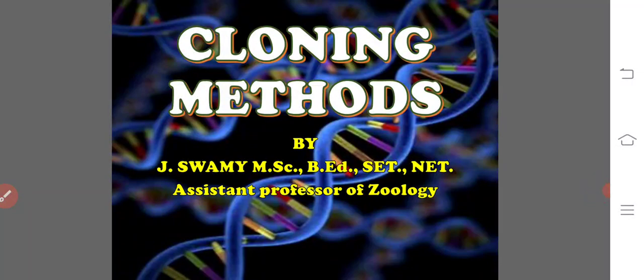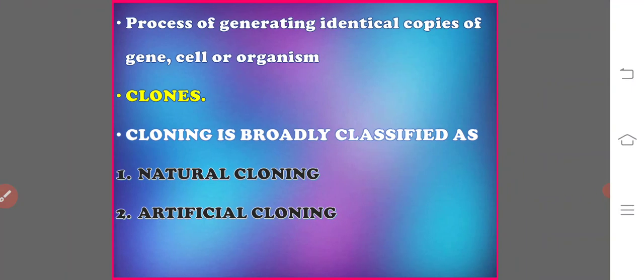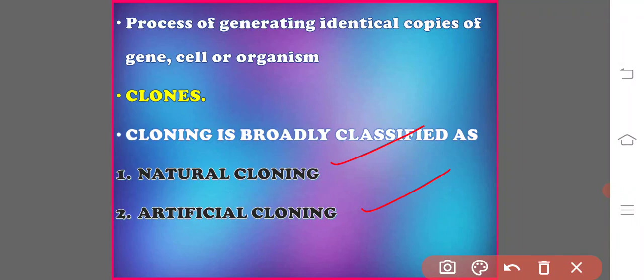In this class we are going to discuss cloning methods. Under this topic we will discuss an introduction and different methods of cloning like cell cloning, animal cloning, and gene cloning. Cloning is the process of generating genetically identical copies of a gene or an organism. The identical copies are called clones. Cloning is broadly classified into two types: natural cloning and artificial cloning.